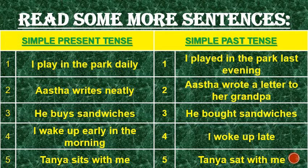'He buys sandwiches' — in past tense, 'He bought sandwiches.' So 'buys' changes into 'bought.' Next: 'I wake up early in the morning' becomes 'I woke up late.' So 'wake' becomes 'woke.' And 'Tanya sits with me' becomes 'Tanya sat with me.' So 'sits' becomes 'sat.'